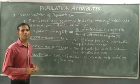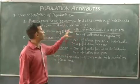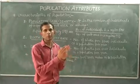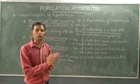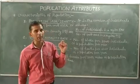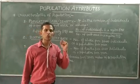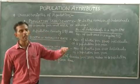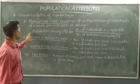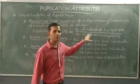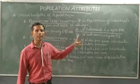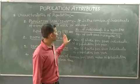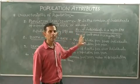First of all, population size or density. It is the number of individuals which live in a per unit area or volume. The number of individuals constitutes the population size in that defined area. Population density is defined as the number of individuals in a region divided by the number of unit areas — that is, number of individuals per unit area.